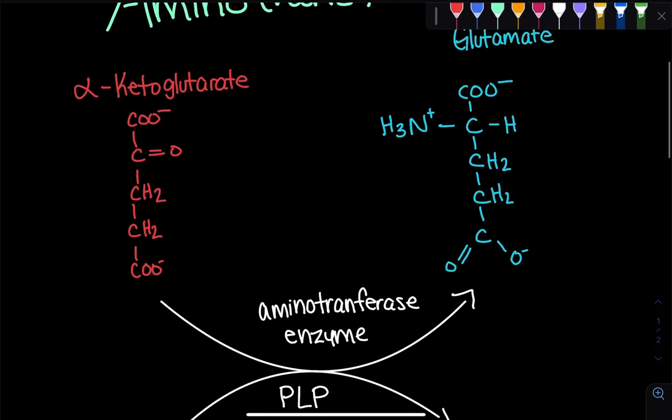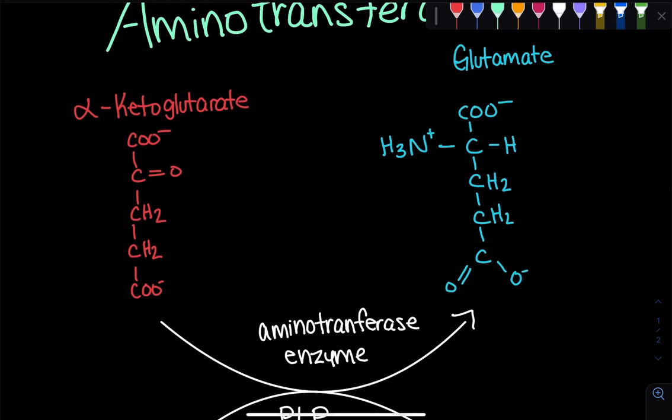Let's compare the two molecules. We have 1, 2, 3, 4, 5 carbons in alpha-ketoglutarate and we have 1, 2, 3, 4, 5 carbons on glutamate.